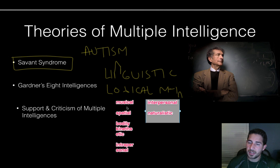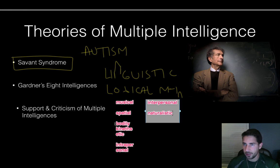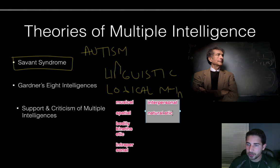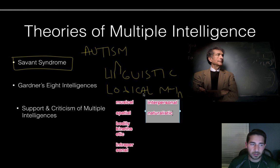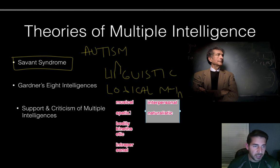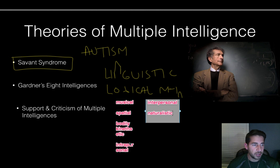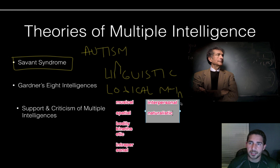These are obviously not all book-smart stuff — spatial, artistic, musical, bodily-kinesthetic like basketball, intrapersonal meaning knowing yourself, interpersonal meaning working with people, and naturalistic. Examples: linguistics — T.S. Eliot; logical-mathematical — Einstein; musical — Beethoven; spatial — Picasso; kinesthetic — any athlete; intrapersonal — Freud; interpersonal — Gandhi; naturalistic — Darwin. So lots of different examples.